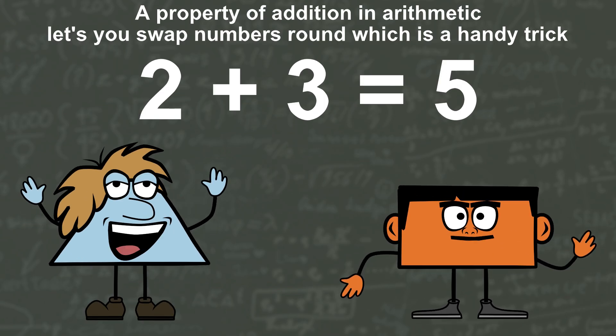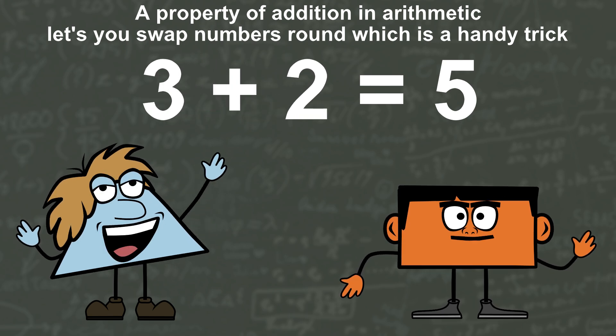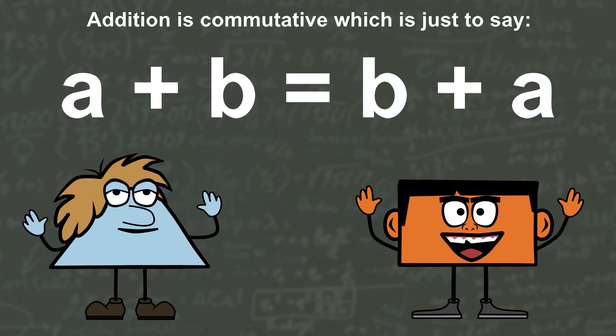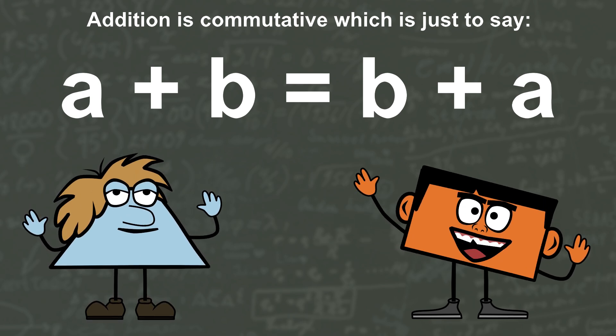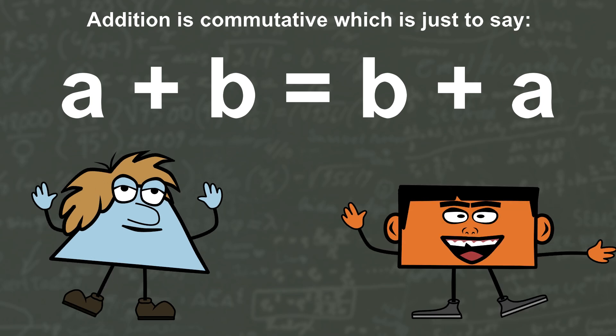A property of addition in arithmetic lets you swap numbers round which is a handy trick. Addition is commutative which is just to say a plus b equals b plus a.